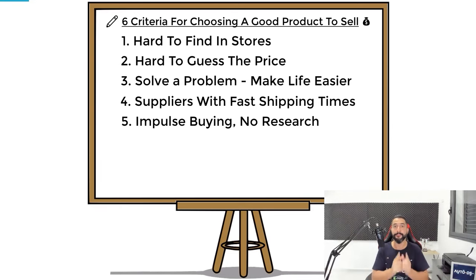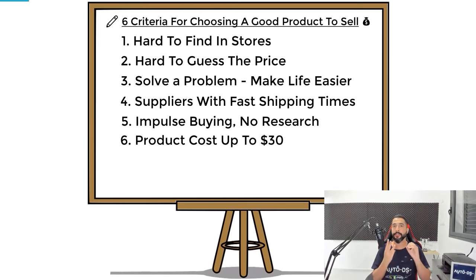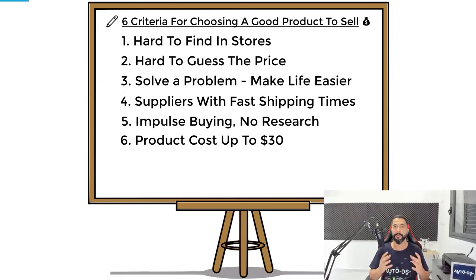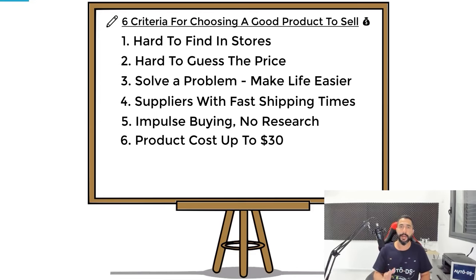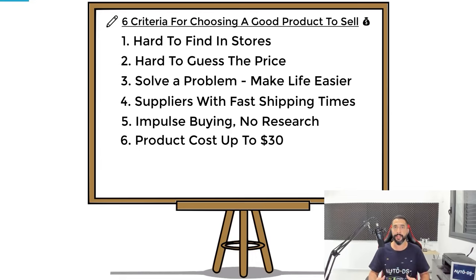The sixth and final criteria is that the products you are adding to your stores should not cost more than $30. Yes, you can dropship products that cost $100, $150, $400, or even $1,000 — there's no problem with that. But if you want a much higher chance of making sales and profits, especially in the beginning of your journey, do not go for expensive products. When your items cost you up to $30, you can sell them for $60 or even $100, make some good profit along the way, and have a much higher chance of selling. Start with cheaper products up to $30.